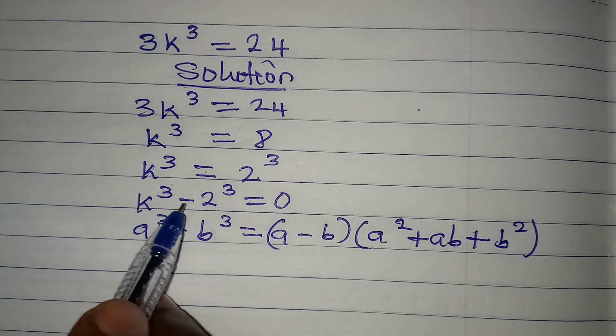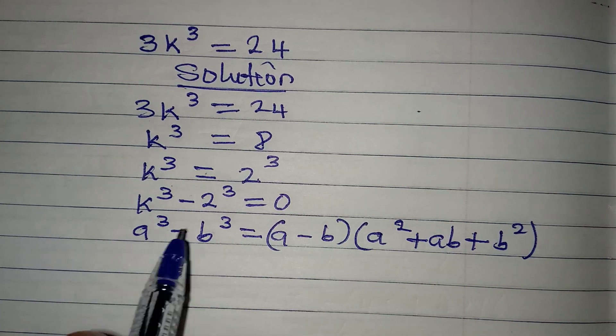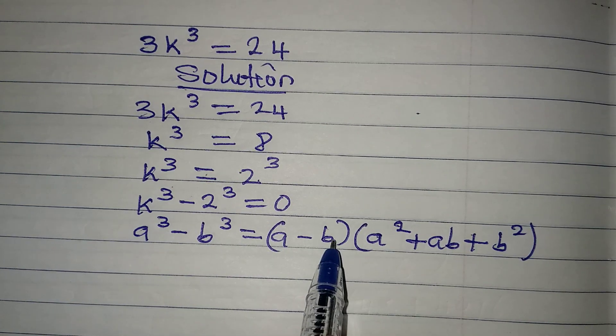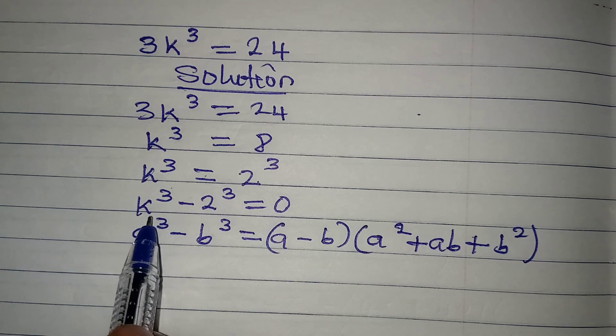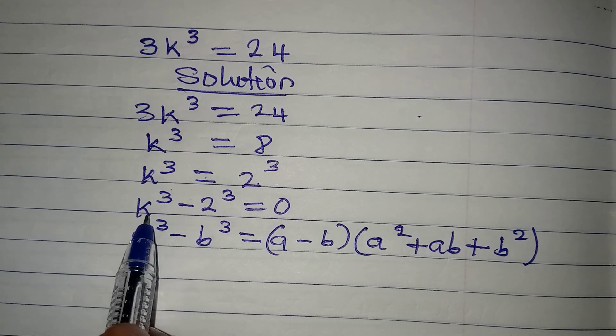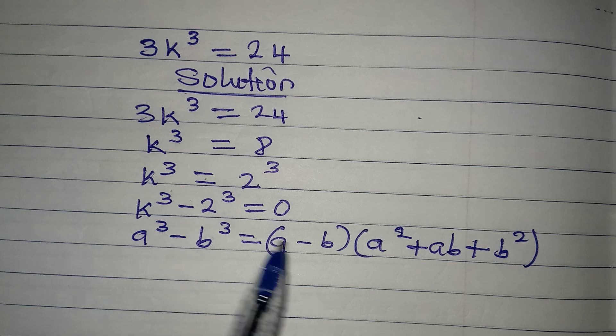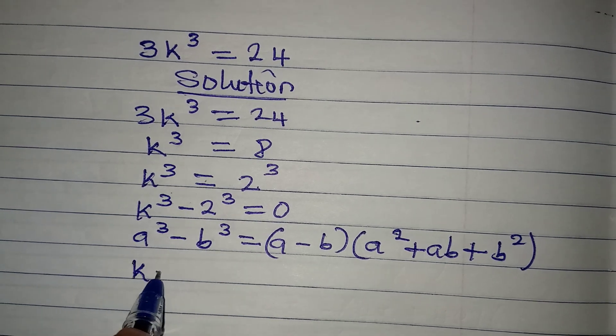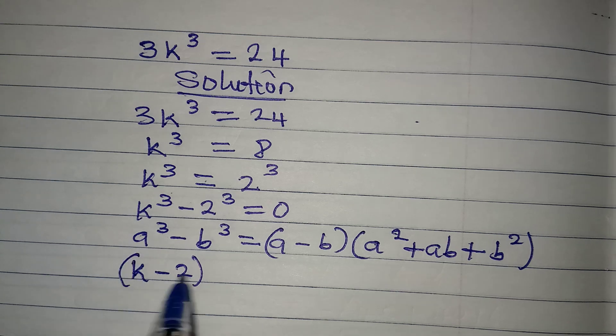Now applying the same standard here, we'll have in place of a - b now, we'll be having k - 2. Yes, we'll be having k - 2 in the first bracket.